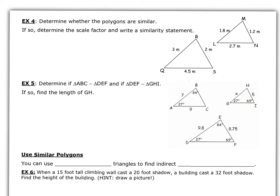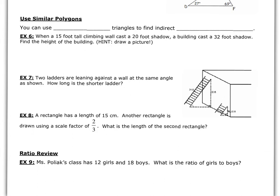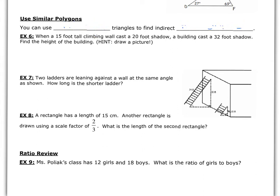Determine whether the polygons are similar; if so, find the scale factor and write the similarity statement. I'd like you to do examples 4 and 5 on your own and come to class with them done — they're just like the examples we did. Now, there are also ways we can use similar polygons, more specifically triangles, to find indirect measures — basically using triangles to find different measurements and lengths.